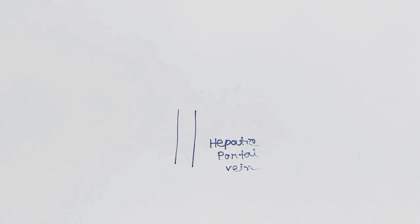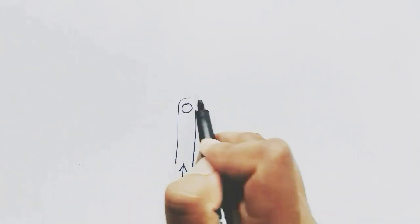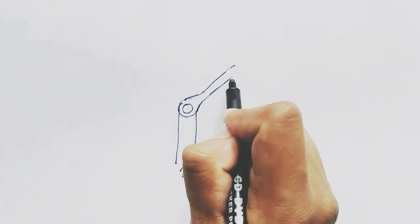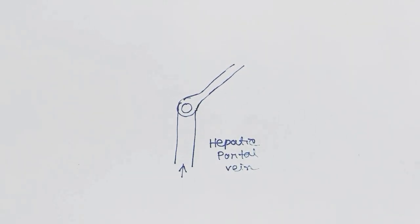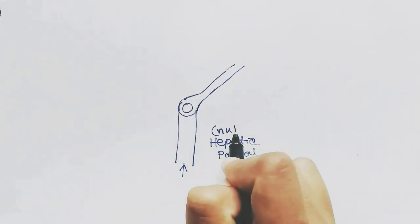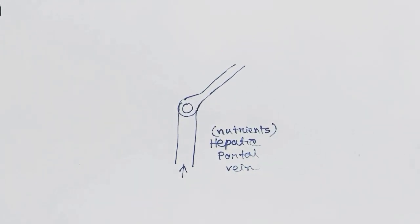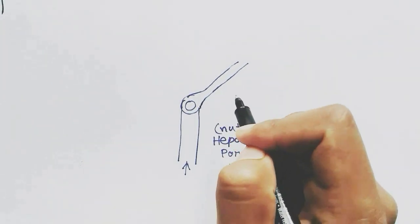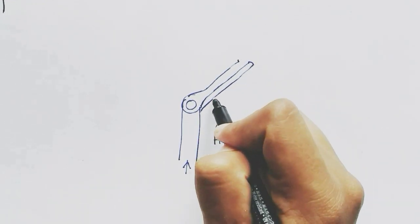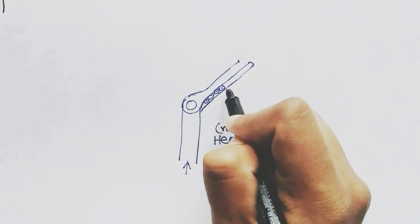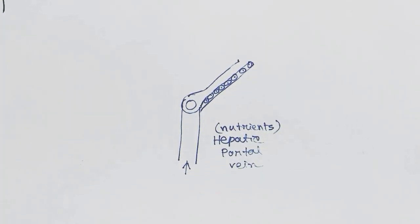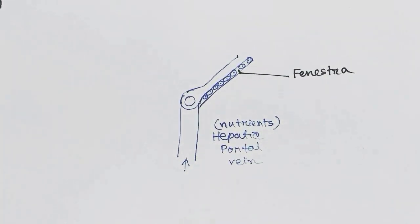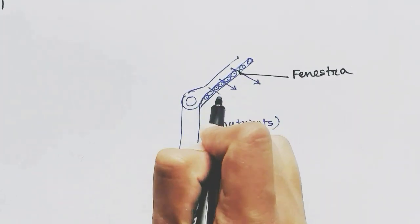Now let's look at the flow of blood and bile in detail. The hepatic portal vein brings nutrient-rich blood through the sinusoids, which then meets the central vein. The sinusoids are capillaries with lots of fenestra — fenestra are pores between the cells of the capillaries — and through these pores, nutrients can easily pass and reach the cells of the liver.